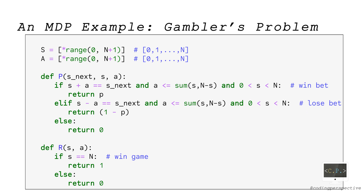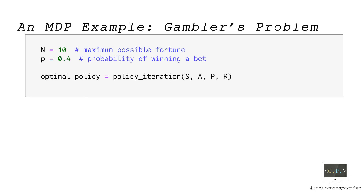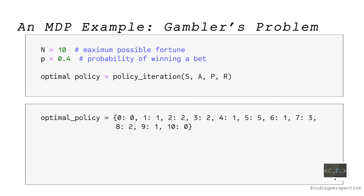Now we are ready to use the policy_iteration function with an example. I will use the same example as the previous video: the gambler's problem. I copied the variables S, A, P, and R from the previous video. To learn more about the gambler's problem and how these variables are defined, please click the link above. To compare results with the value iteration algorithm, I set N to 10 and probability P to 0.4. The output optimal policy looks as shown. For example, the gambler needs to bet 5 when the current fortune is 5, and 3 when the current fortune is 7. We obtain the same policy as with the value iteration algorithm in the previous video.